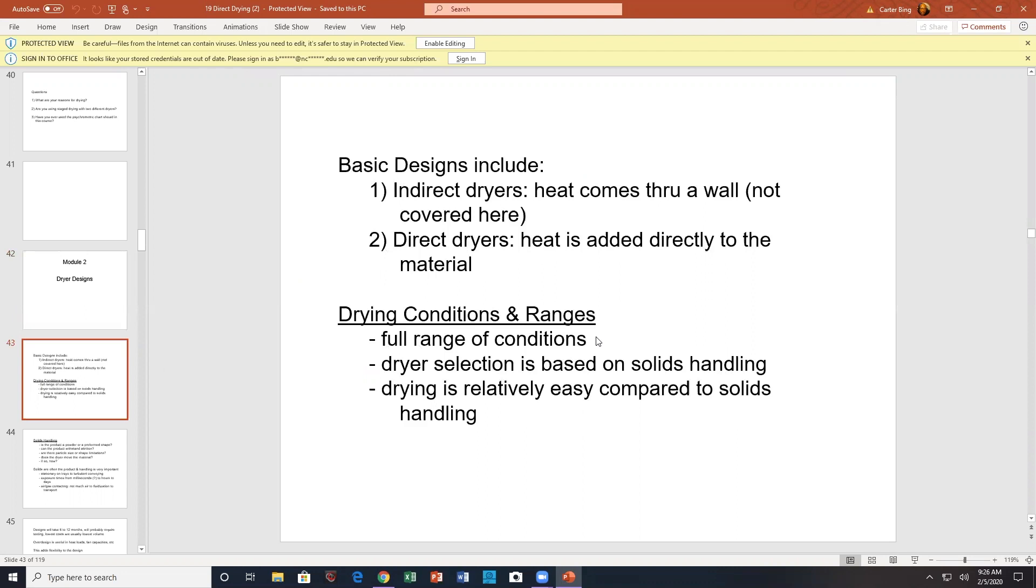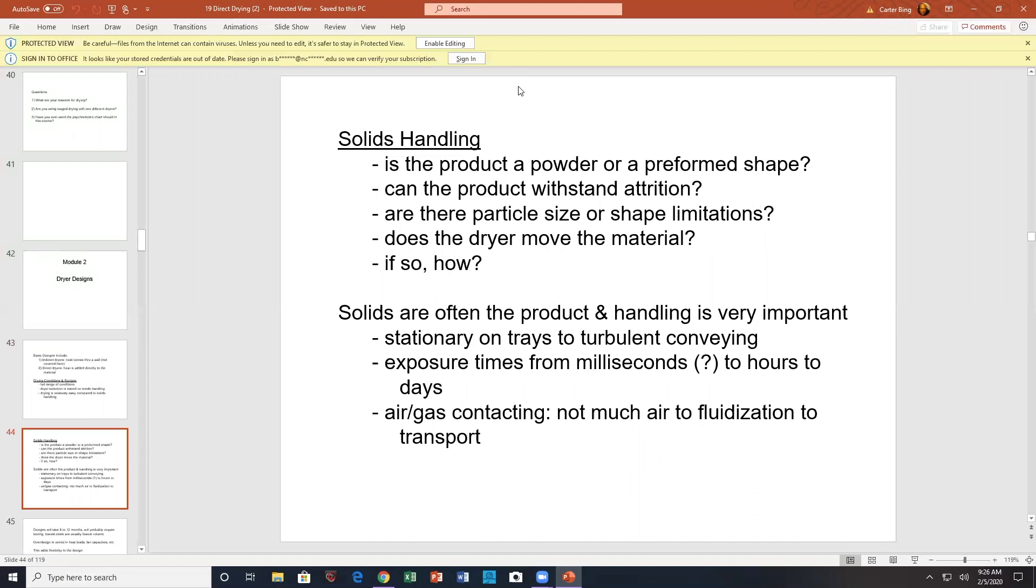Typically you have a full range of conditions. Dryer selections based upon solids handling, but drying is actually relatively easy compared to solids handling. Is the product a powder or a preformed shape? Can the product withstand attrition? Are there any size shape limitations? How does the dryer move the material? Solids are often the product and handling is very important. Stationary on the tray to turbulent conveying, exposure times could be from milliseconds to hours.